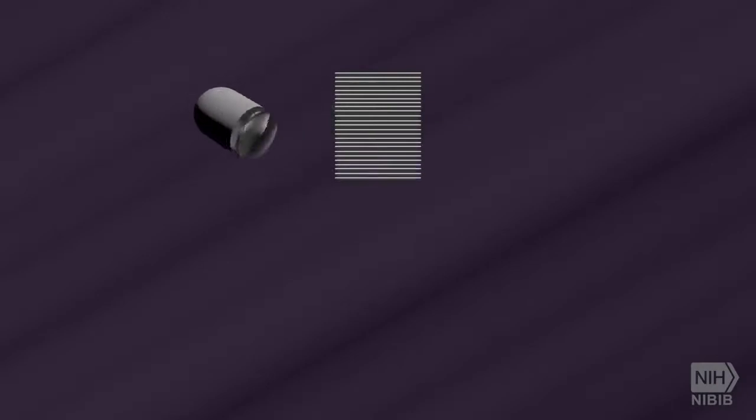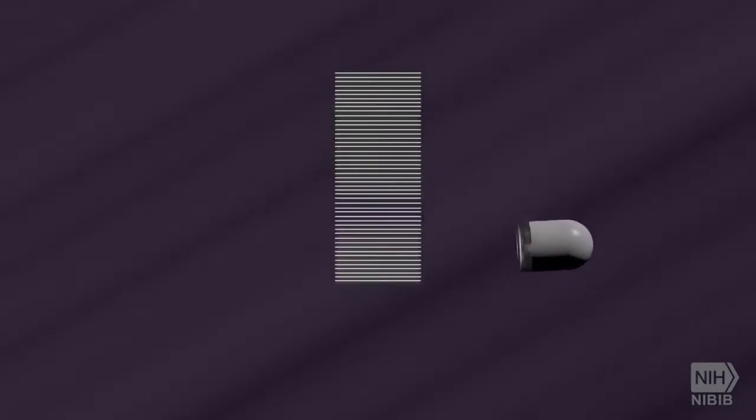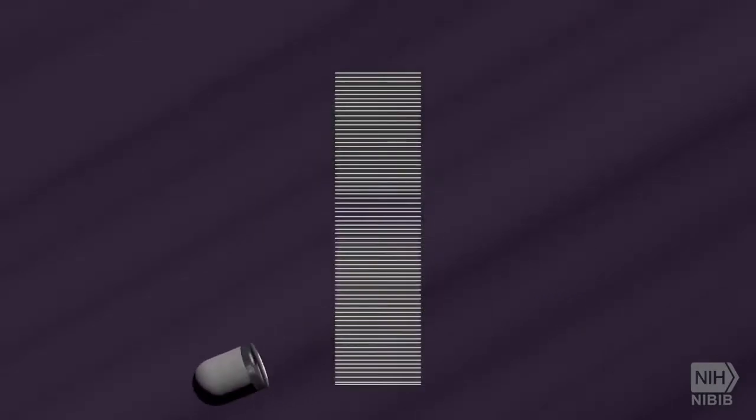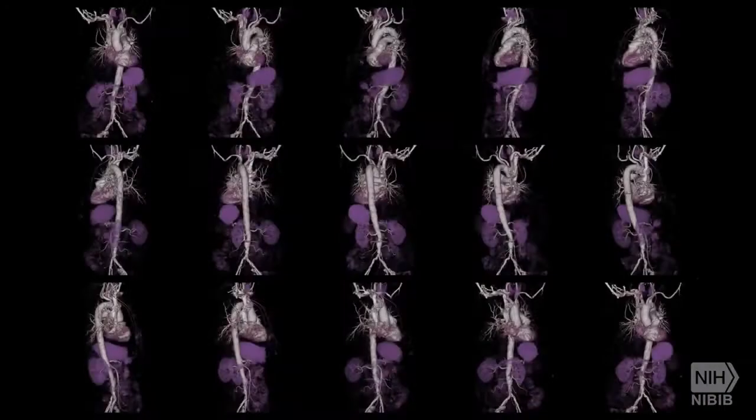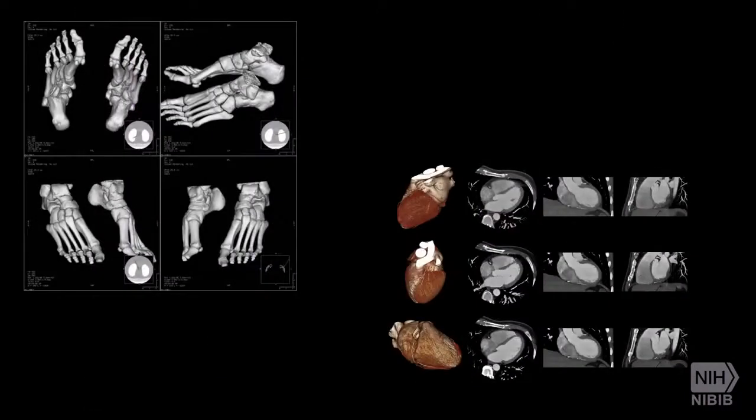A CT scan is an x-ray procedure that creates cross-sectional images with the help of computer processing. CT images are more detailed than conventional x-ray images and can reveal bones as well as soft tissue and organs.